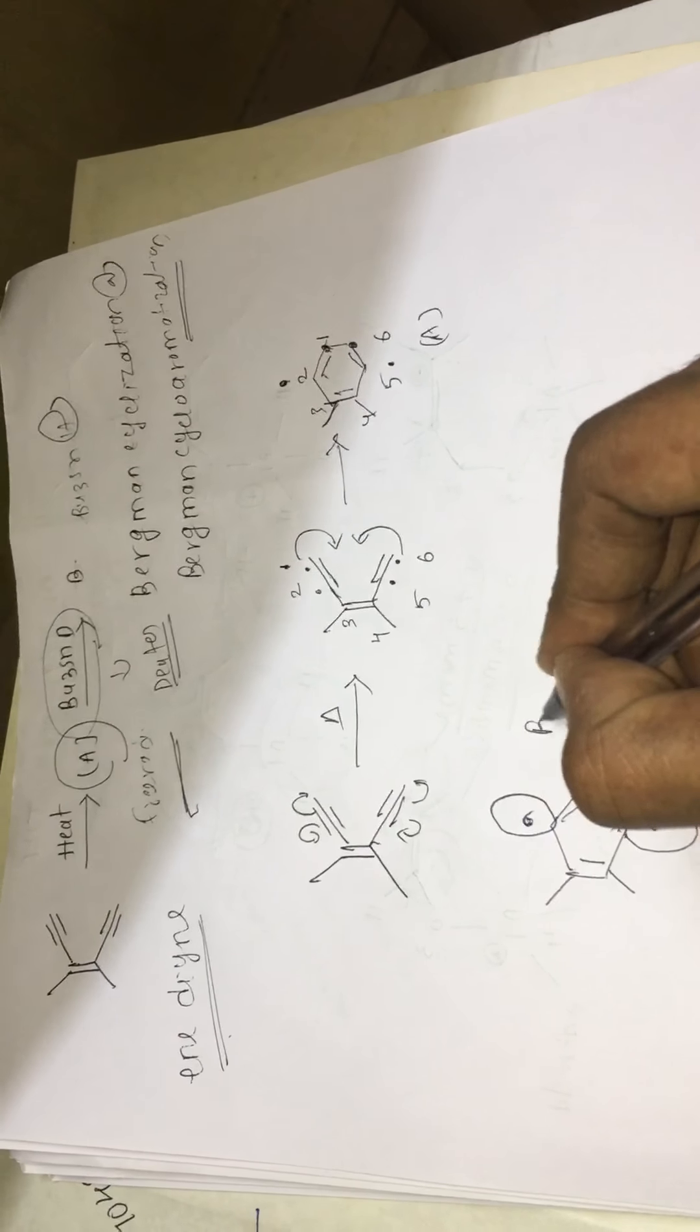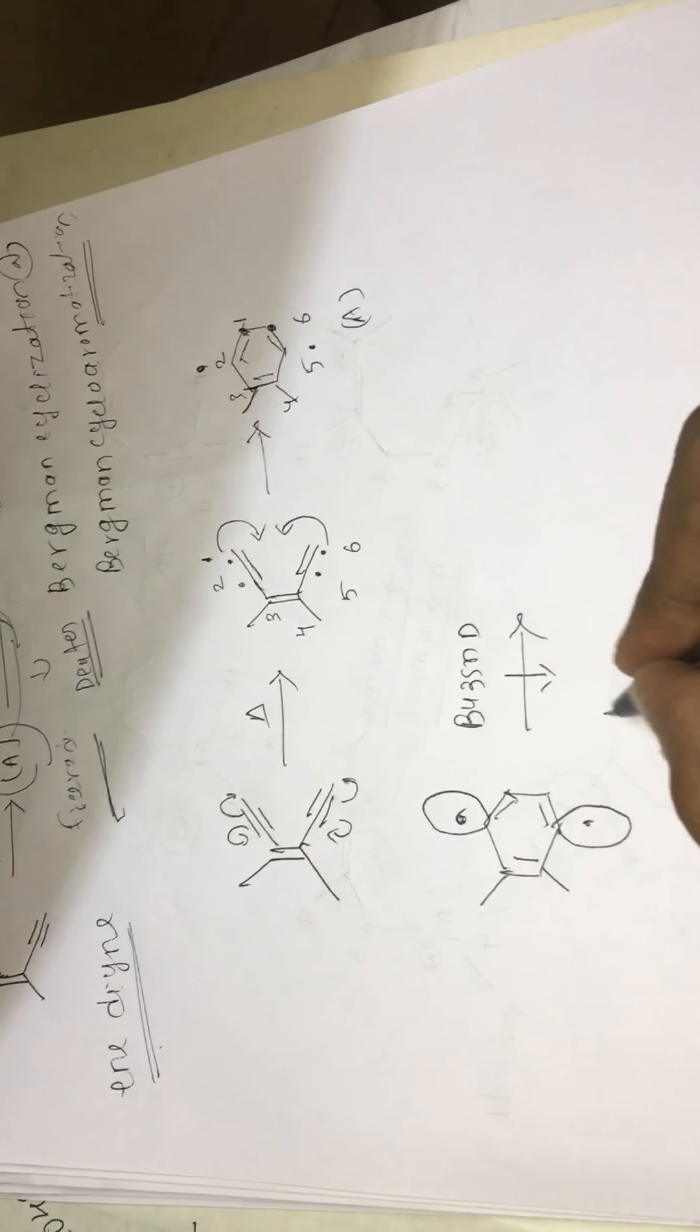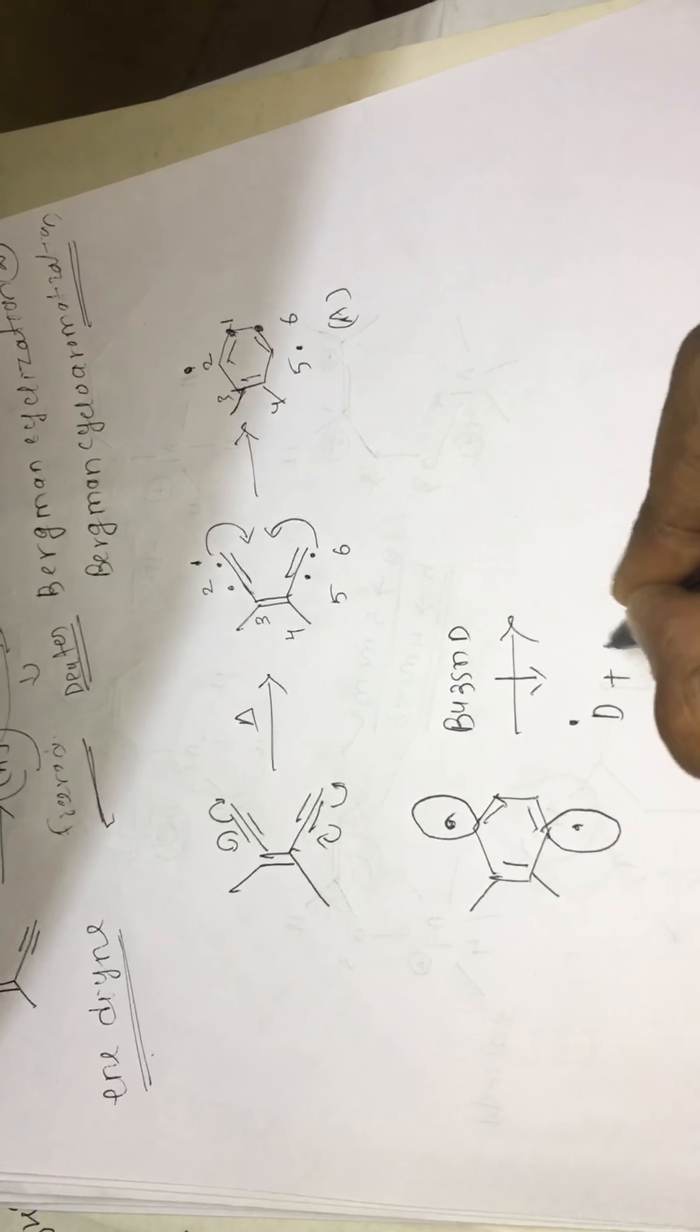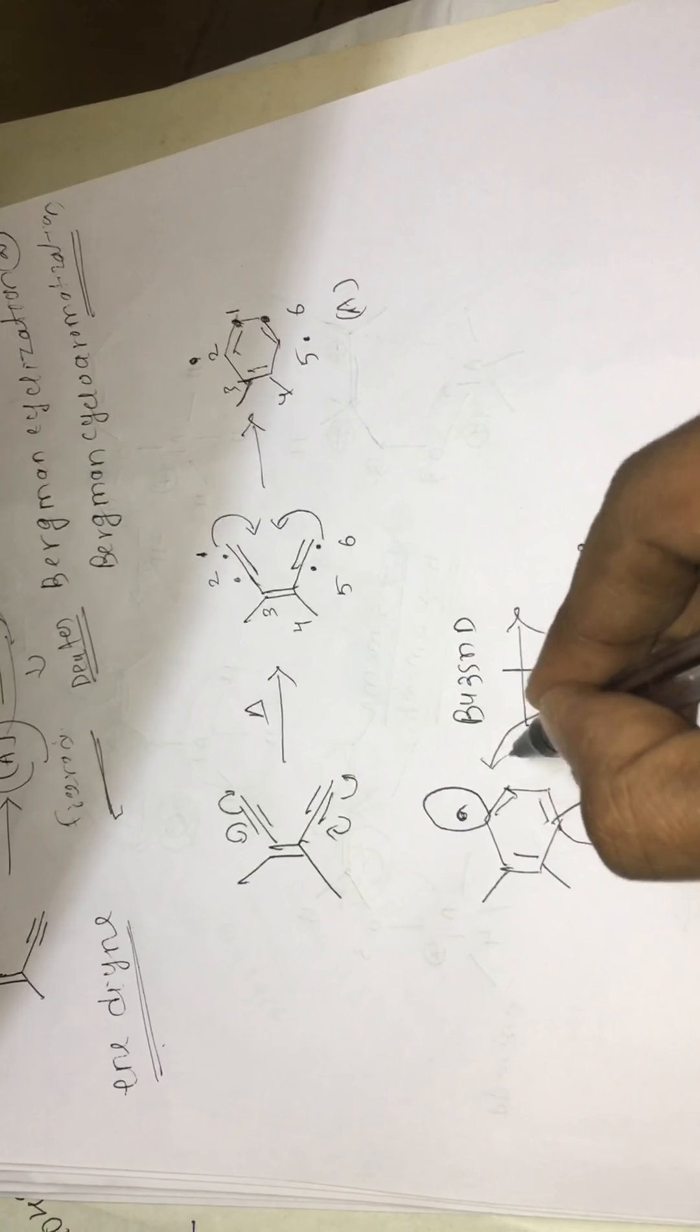Now we have Bu3SnD. So this is the source for deuterium radical. Plus Bu3Sn. So this deuterium goes and attacks here.